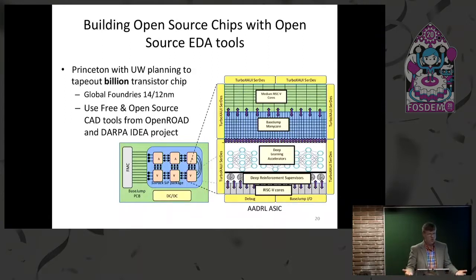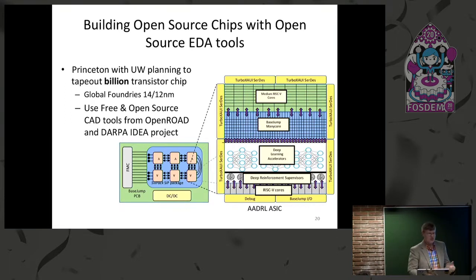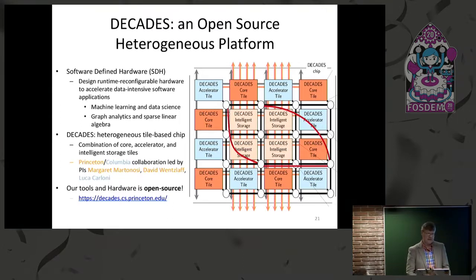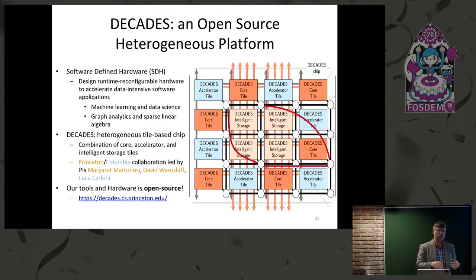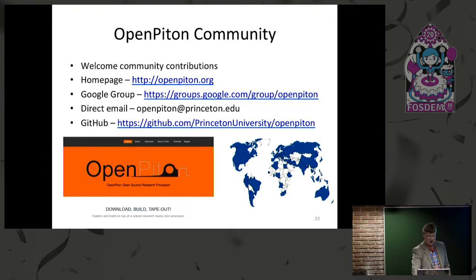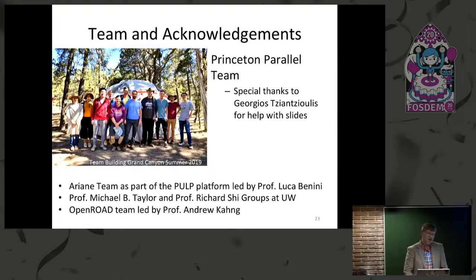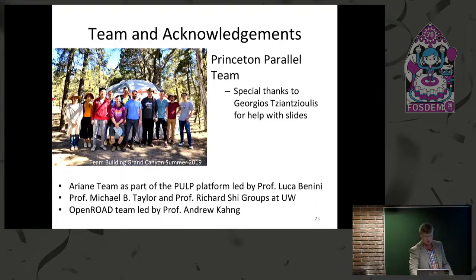We're building a billion-transistor chip with the open source OpenFlow tools and taping it out in GlobalFoundries 12 nanometer — we're really excited about that. We're also part of the DECADES project under the DARPA SDH software-defined hardware program, looking at open source designs and the OpenPiton design to build a heterogeneous many-core platform. We have a whole community — please go to our GitHub page. OpenRoad is doing some really great stuff; you should all go check it out.